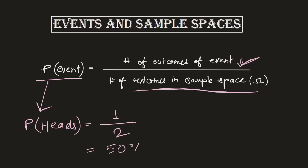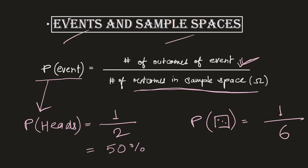This means if you are tossing an unbiased coin, there is a 50% chance you will achieve heads. Another example would be throwing a dice where you want to check the probability of getting number three. When throwing a dice there will be only one outcome out of all the possible six outcomes within the sample space. I hope the idea of events and sample spaces is now clear.